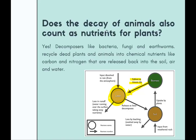Another question: does the decay of animals also count as nutrients for plants? Answer is yes. Both dead plants and dead animals will be decomposed by decomposers like bacteria, fungi, and earthworms. From this process of decomposition, the dead plants and animals will be recycled into chemical nutrients such as carbon and nitrogen, which are then released back into the soil, the air, or water. In the nutrient cycle, biomass includes all living things including plants and animals. When plants and animals die, they contribute to the litter, and as the litter decomposes, nutrients are released into the soil. So animals are also part of the biomass and therefore contribute to the litter and subsequently to the nutrients in the soil.